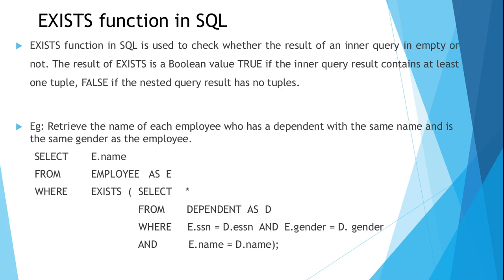We will see an example: retrieve the name of each employee who has a dependent with the same name and same gender as the employee. The conditions are specified in the inner query — we compare the gender and name of the dependent with that of the employee, and E.SSN = D.ESSN is also given as a condition. If all these conditions are satisfied, we retrieve the tuples using SELECT *. Now if such a tuple exists, if the result of the inner query has at least one tuple, this EXISTS function returns true, and we retrieve SELECT E.name.